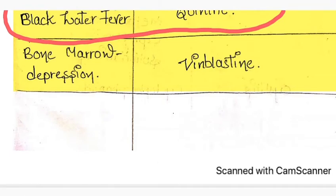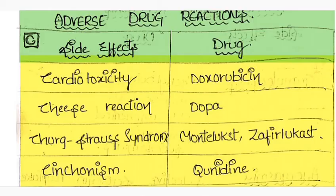Cardiotoxicity is caused by doxorubicin, which is an anti-cancer antibiotic. This is also very very important for GPT orientation.